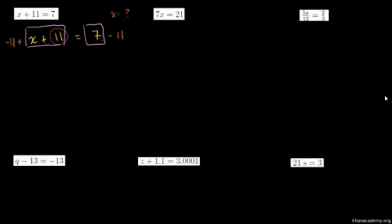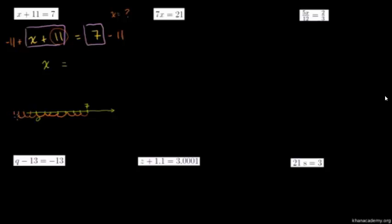x plus 11 and 7 are equal, so they're still going to be equal after I subtract 11 from both sides. On the left-hand side, negative 11 plus 11 cancels out, leaving just x. On the right-hand side, we get 7 minus 11. Using a number line, starting at 7 and going back 11 steps takes us to negative 4. So x is equal to negative 4.